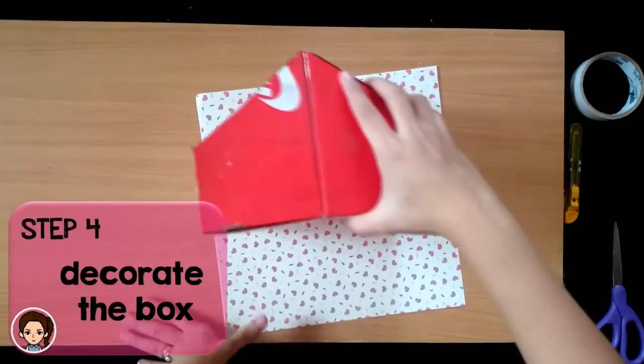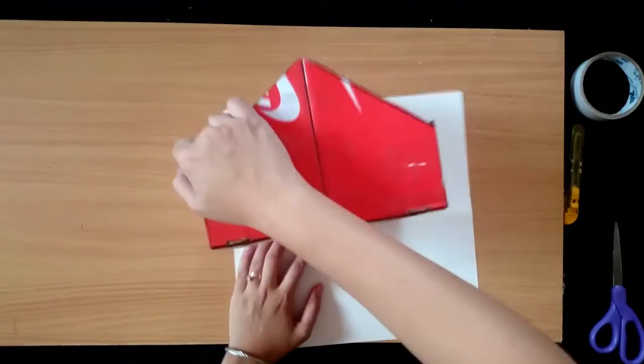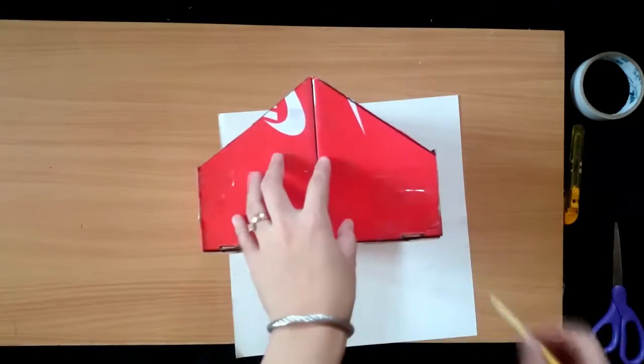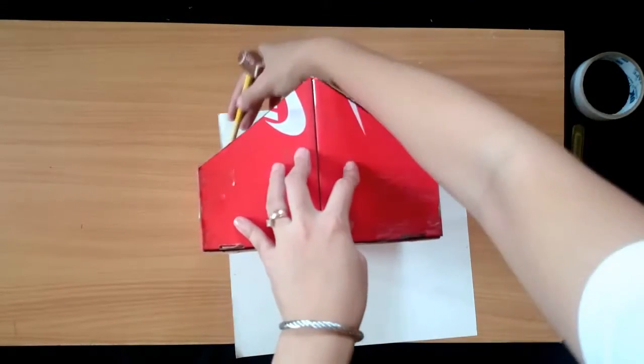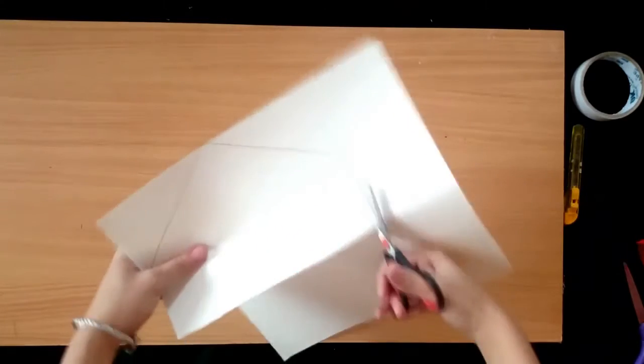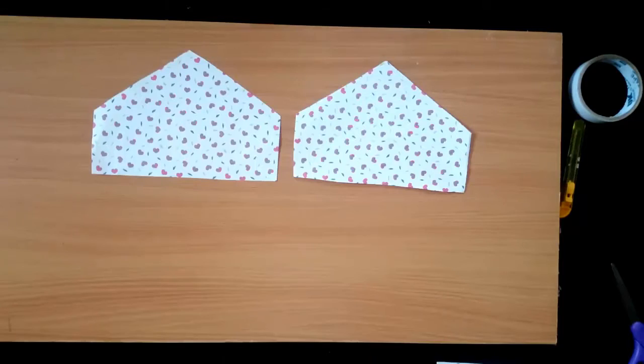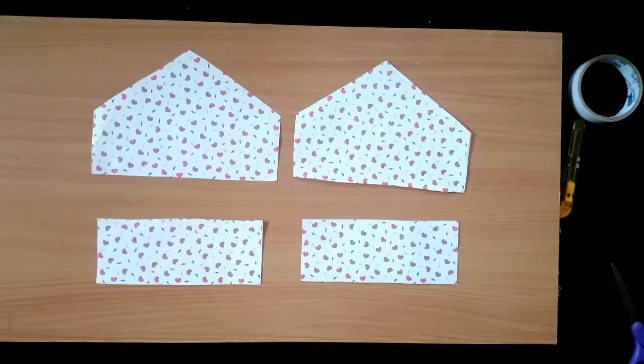Step 4: Decorate the box. Trace the sides of your organizer on scrapbook paper or any wrapping paper. Once all the sides are ready, attach them to the box.